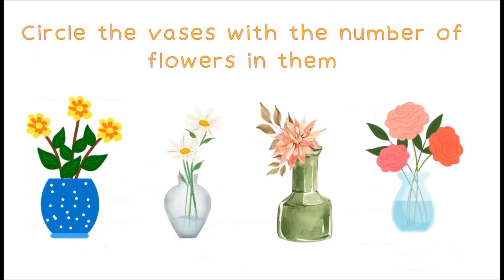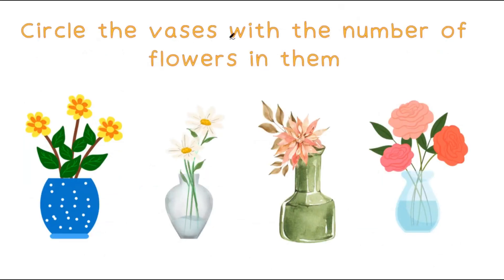Good job! Circle the vases with the number of flowers in them. The number we are looking at is the number 3. How many of these vases have 3 flowers in them? Good job! That would be 2 vases. 1, 2.